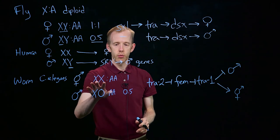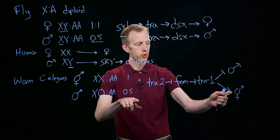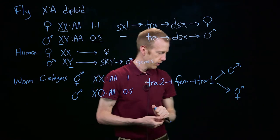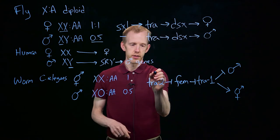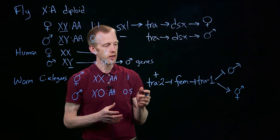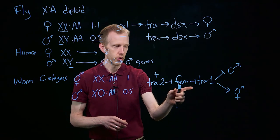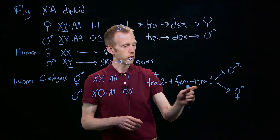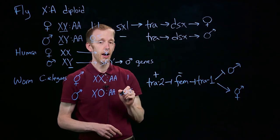So in a hermaphrodite, when the X to autosome ratio is 1, we're going to produce hermaphrodites. And in that case, what happens is TRA-2 is present, it's active. And this is how a repression cascade works. When TRA-2 is present, that means the FEM proteins are not produced. They normally repress TRA-1. So with TRA-2 present, FEM is absent.